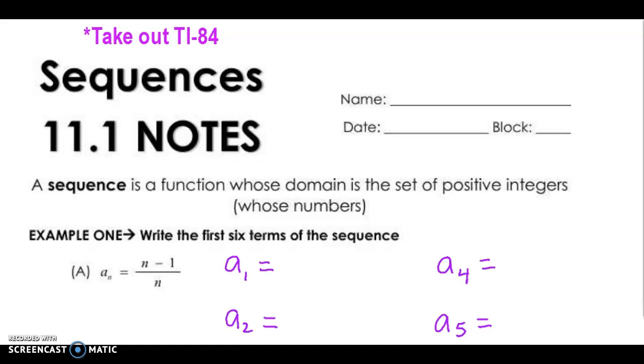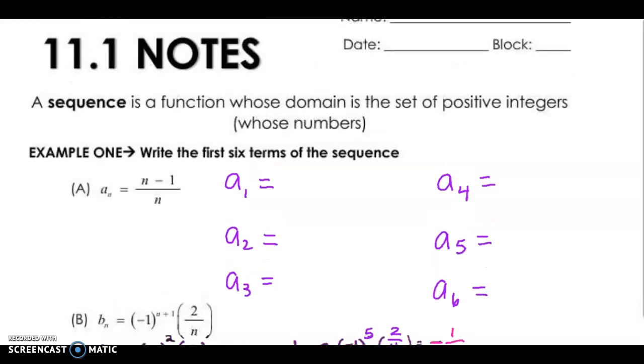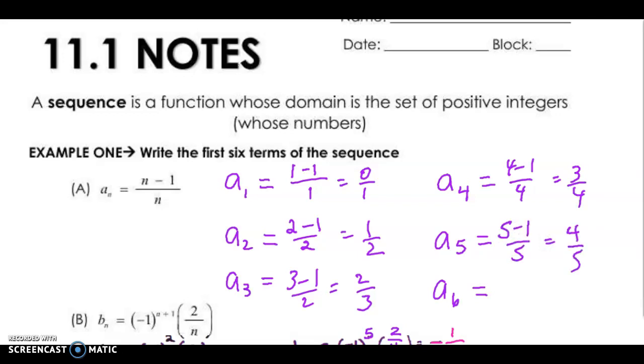For example one, it says write the first six terms of the sequence. We're going to follow the formula. If I plug in 1 here for n, for the first term a sub 1, plug in 1 minus 1 over 1, I'm going to get 0 over 1. Go to the next one, 2. If I plug in 2 minus 1 over 2, I get 1 half. If I plug in 3 minus 1 over 3, I get 2 thirds. 4 minus 1 over 4, I get 3 fourths. 5 minus 1 over 5, I get 4 fifths. And the last one, 6 minus 1 over 6, I get 5 sixths.